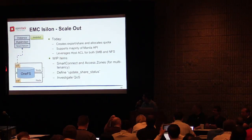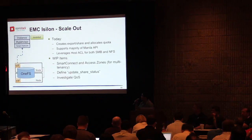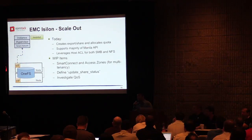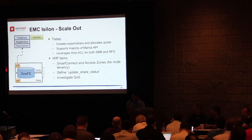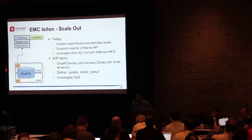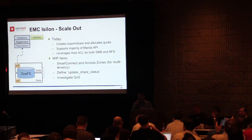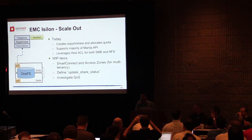From the EMC Isilon side, which is our scale-out platform, we basically have a single namespace, and what we do is create a new export and assign a quota to it — that quota is then available as a share. Just like the VNX, it already supports the majority of the Manila API, and likewise uses host ACL for both SMB and NFS. Going forward, just like the VNX, we're still evolving to the multi-tenancy APIs — we're going to use our SmartConnect and access zone features to facilitate multi-tenancy in Isilon, and we have some QoS investigation to do as well.